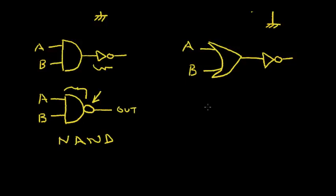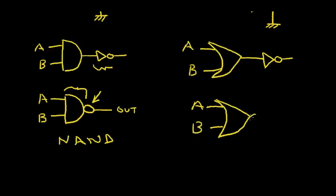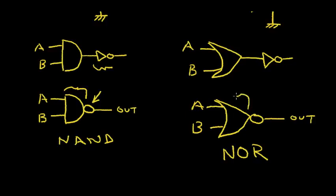Similarly, with the NOR gate, we can simplify the symbol. Input A, input B, and we show the inverter as just a bubble at the output. This is called the NOR gate, meaning NOT OR — the OR part is the gate body and the bubble is the NOT.